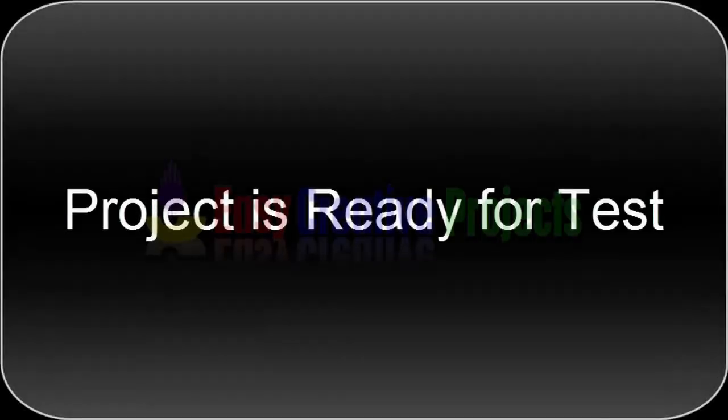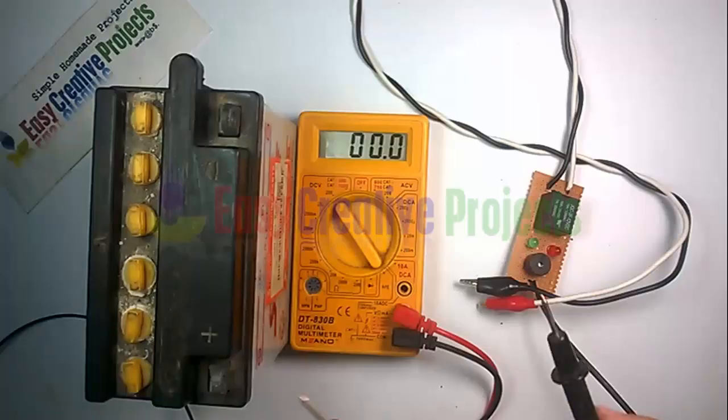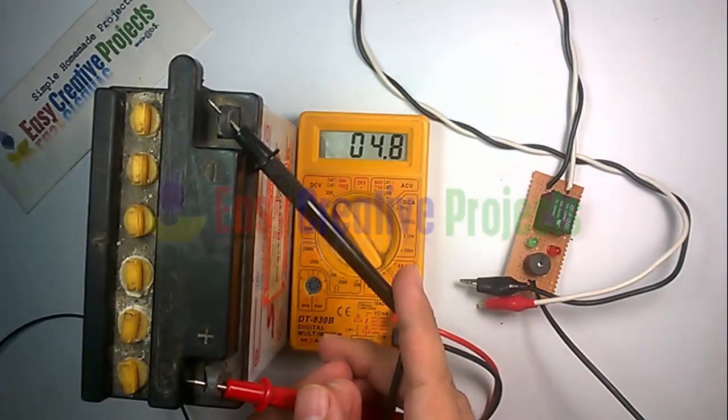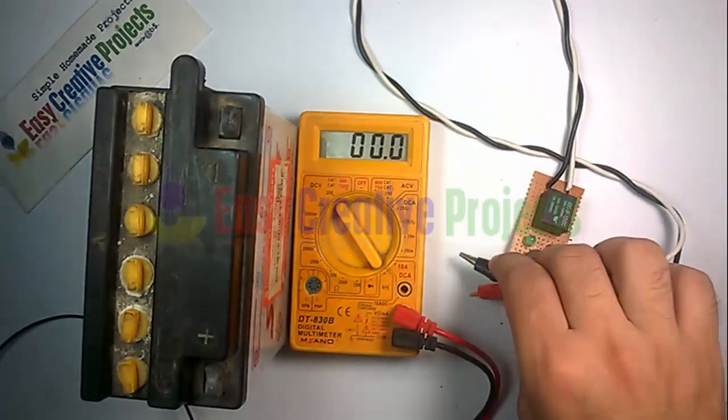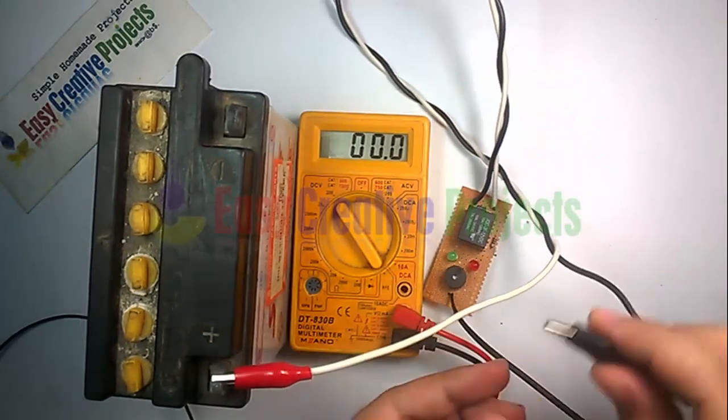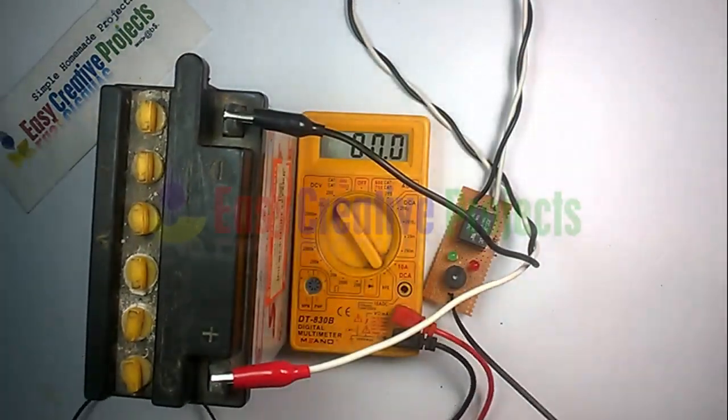The project is ready for testing. This time the battery has no charge and only 4.8 volts show. When we connect the circuit with the battery, then the siren activates.